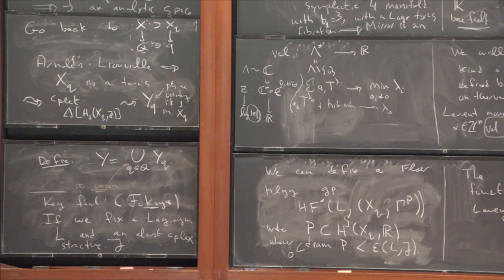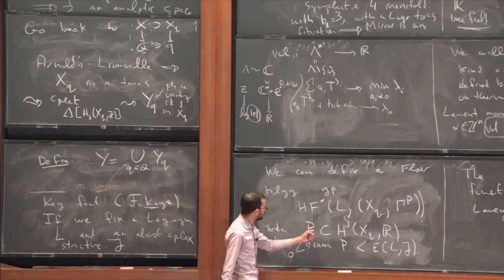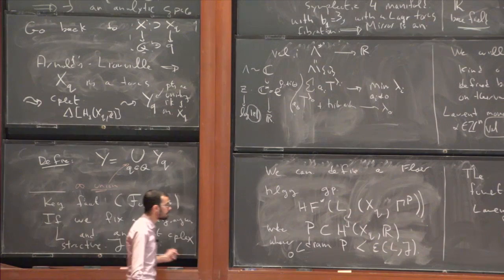We can define a Floer homology group HF*(L, X_Q; Γ_P), where P is a subset of H¹(X_Q; ℝ) whenever the diameter of P is sufficiently small — smaller than some epsilon which depends on L and J. In the case P equals zero, if you're actually working with P equals zero, you don't have to make any choices: the Floer homology is actually well-defined, everything is invariant. But if you want to take a non-zero polytope, then you have to fix an L and a J.